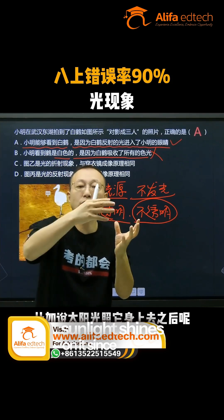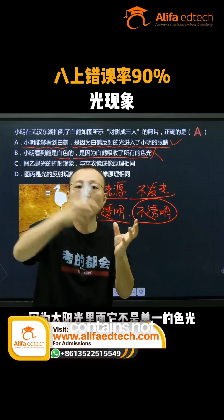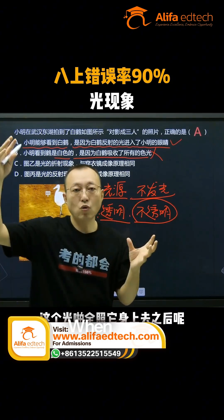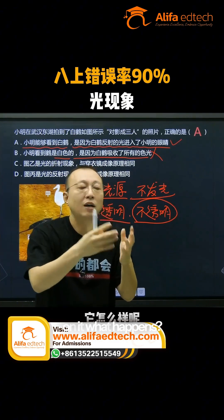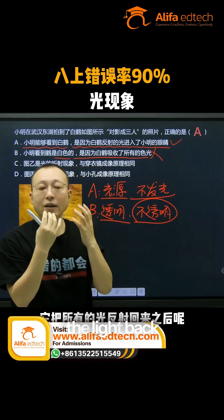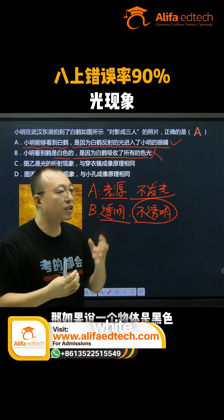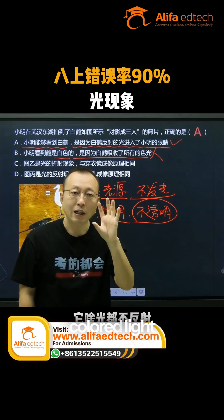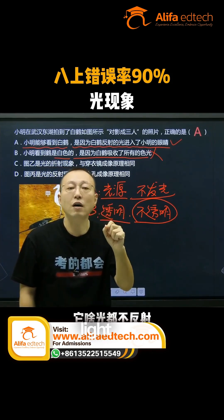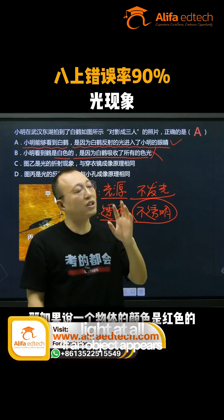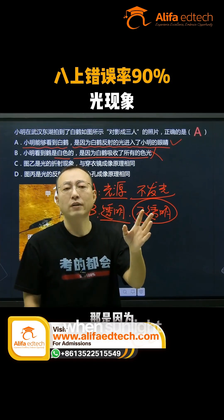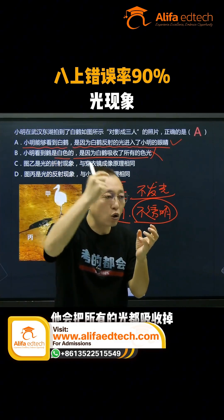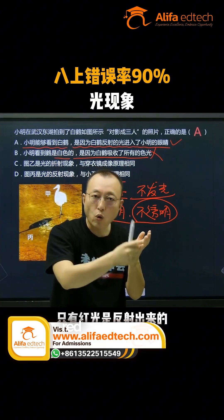When sunlight shines on it, since sunlight contains not just a single colour but red, orange, yellow, green, blue, etc., it reflects all the light back, making it appear white. If an object is black, it's because it absorbs all coloured light, reflecting no light at all. If an object appears red, it's because when sunlight shines on it, it absorbs all other light and reflects only red light, so it appears red.